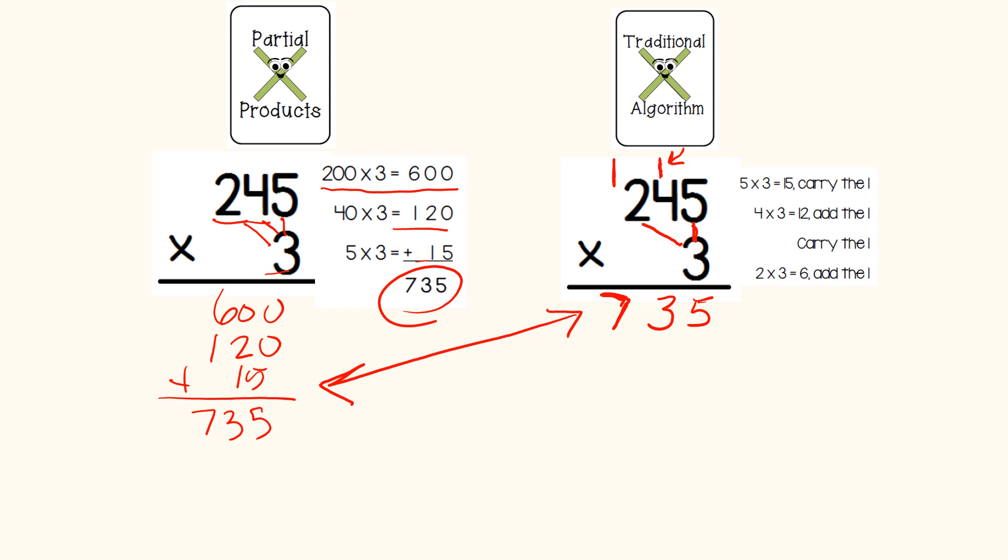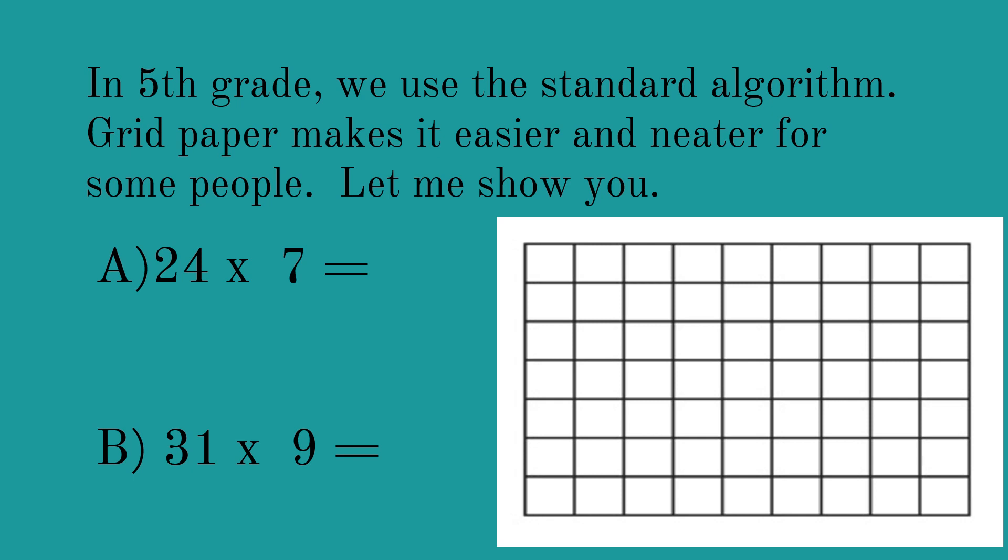Now notice the difference in the amount of work. It's a little bit shorter, which is why the algorithm is something that mathematicians like to create as shortcuts, makes things a little more efficient and faster. In fifth grade, we're going to use the standard algorithm, and I like to start off by using grid paper at first just because it helps you keep things a little neat. So let's look at how it works in grid paper. Letter A, 24 times 7, so I write 24, I put the multiplication sign over here, times 7, draw a line.